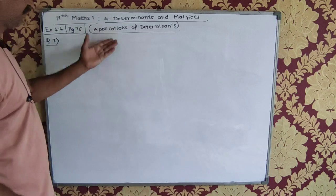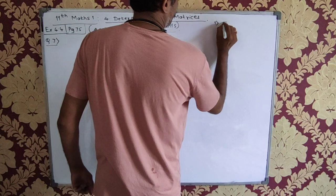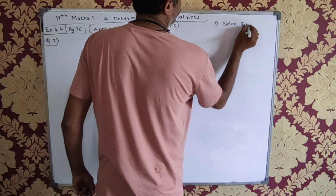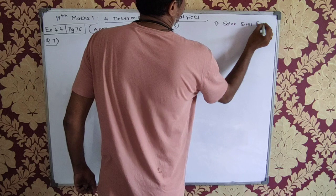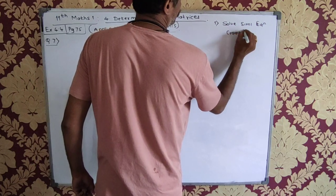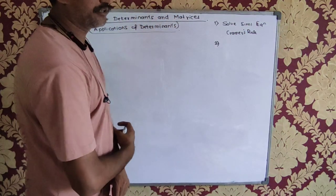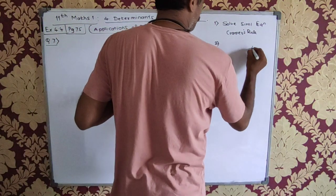Now, various applications of determinants that we know. First one is solving simultaneous equations. Right? And here we make use of the Cramer's rule.